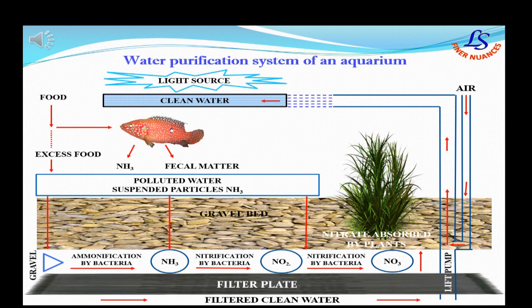This is the water purification system of an aquarium — an inbuilt natural process. The food fed to the fishes and the excess food that passes, along with polluted water, flow through the gravel. By the process of ammonification and nitrification, they get converted into NO3 and NO2, and thus the water remains clean in an aquarium.